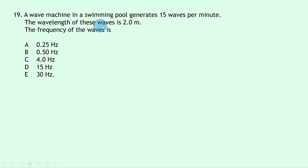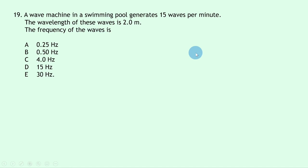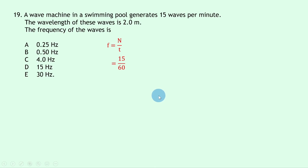Question 19: a wave machine generates 15 waves per minute with a wavelength of 2.0 m. Using f = n/t = 15/60 = 0.25 Hz. The wavelength is a distractor — it wasn't needed here. The answer is A.